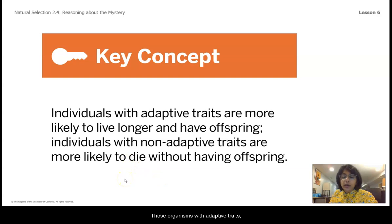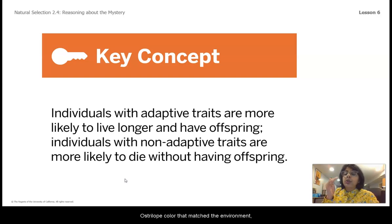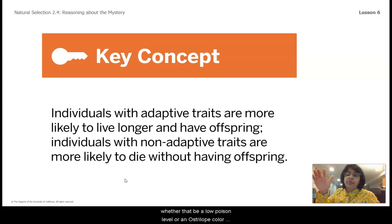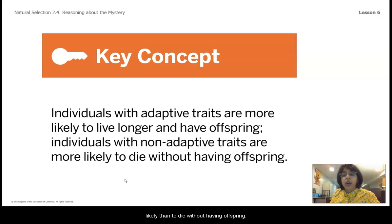We also saw this in our simulation from last lesson. Those organisms with adaptive traits — whether that be poison level or the adaptive trait of ostrilope color that matches the environment — those organisms are able to live longer and then have offspring. And the individuals with non-adaptive traits, whether that be a low poison level or an ostrilope color that does not match the environment, they're going to be eaten quicker and are more likely to die without having offspring.